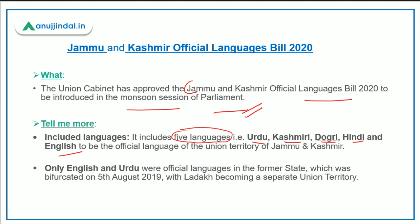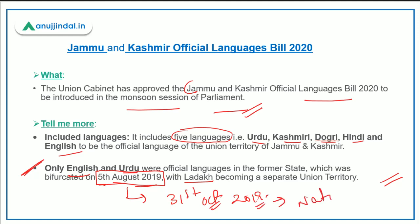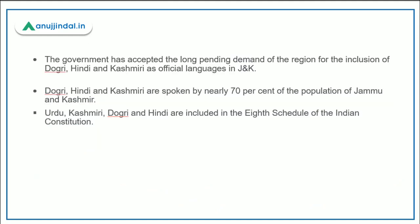These five languages will be the official languages of the union territory of Jammu and Kashmir. Before this, there were only English and Urdu as the official languages in the former state of Jammu and Kashmir. It came into force on 31st October 2019, which was National Unity Day — the birthday of Sardar Vallabhbhai Patel, the first Home Minister of our country. The government accepted this long-pending demand for inclusion of Dogri, Hindi, and Kashmiri as official languages.